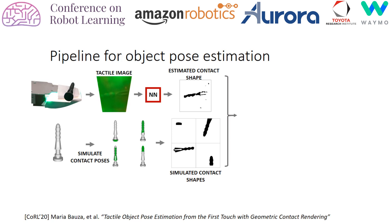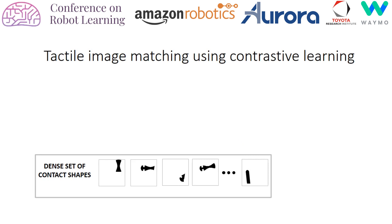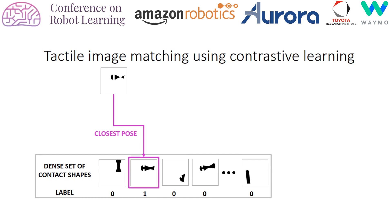For that, we use tactile image matching, which assigns a probability to each of the pre-computed simulated contact shapes being the closest one to the one that comes from the sensor. To train tactile image matching, we use the dense set of poses and contact shapes pre-computed in simulation. We generate a random contact pose and its contact shape, and find which one is closest from the dense set, then generate a label indicating how likely each element is to be the closest in pose distance.